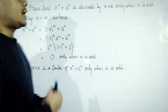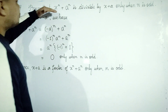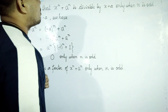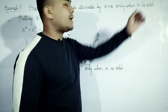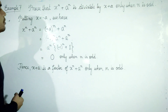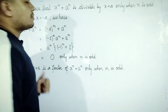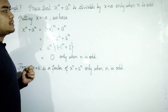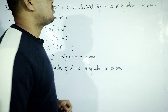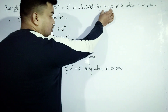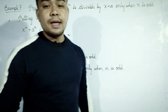Example number 7. Proof that x to the power n plus a to the power n is divisible by x plus a. We have the polynomial x to the power n plus a to the power n is divisible by x plus a.